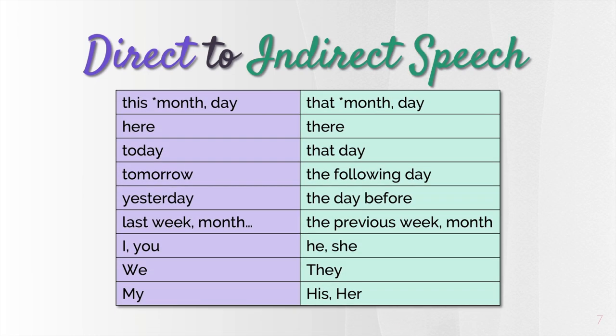Now let's look at how other words change. 'This month' and 'this day' change to 'that month' and 'that day.' 'Here' changes to 'there.' 'Today' changes to 'that day.' 'Tomorrow' becomes 'the following day.' 'Yesterday' becomes 'the day before.' 'Last week' and 'last month' change to 'the previous week' and 'the previous month.' Pronouns also change: I and you change to he or she depending on the person, we changes to they, and my changes to his or her. There are other changes, but we just need to concentrate on these ones.